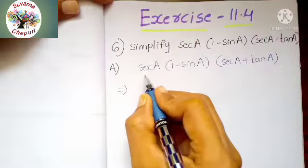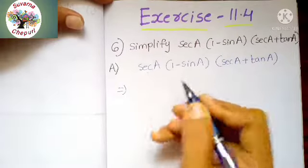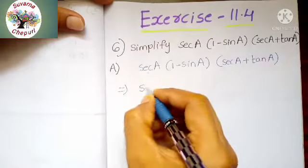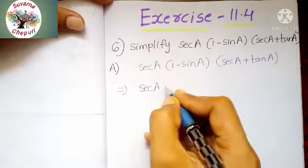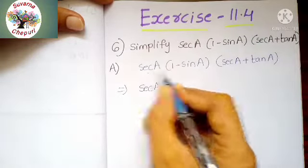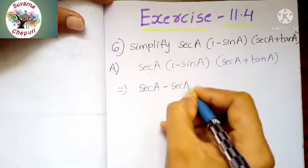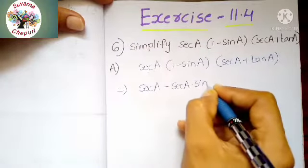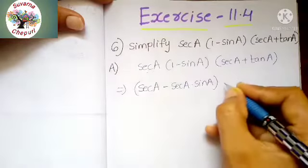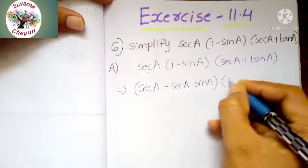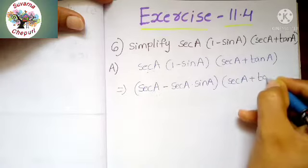Next, multiply secant A into the whole bracket. Then secant A into 1 means secant A, minus secant A into sin A. Next, into secant A plus tan A.